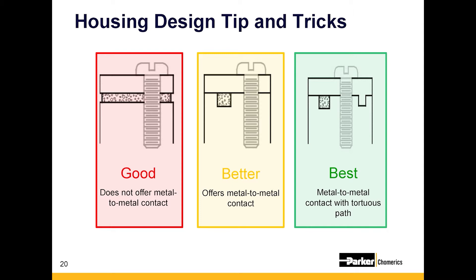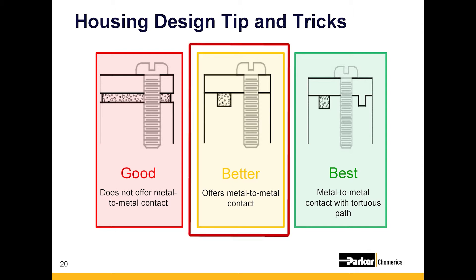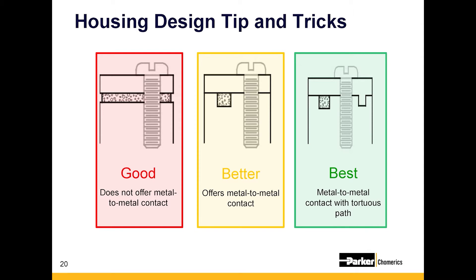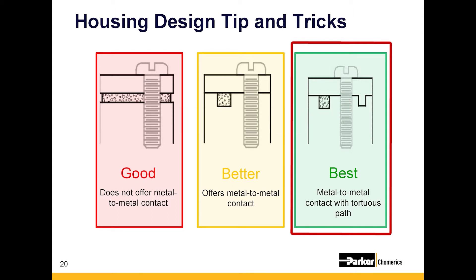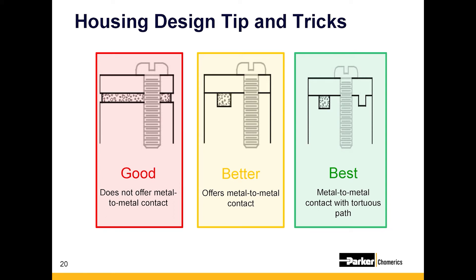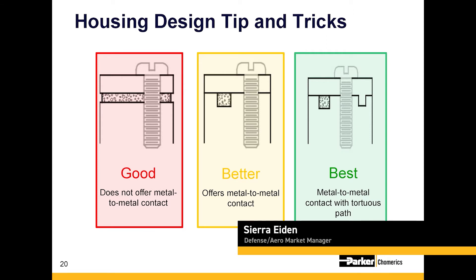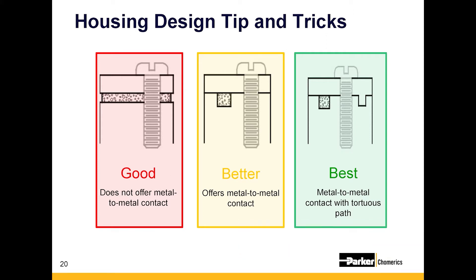One of the most common designs is shown in the middle — a gasket designed into a groove, the solid-O that Sierra talked about. The benefit is that it provides metal-to-metal contact. On the right, you'll see a gasket designed into a groove along with a tortuous path, which adds to both the environmental sealing and the EMI interference shielding. The need for a tortuous path really depends on the amount of shielding required and the exposure to water.